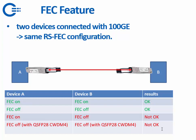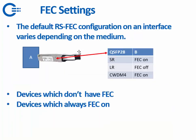FEC settings are typically configured by the switch or router itself. The device will look at the optic module type — whether it's an SR, LR, CWDM4, or copper — and turn FEC on or off based on that. For example, for an SR it turns FEC off, for an LR it also turns it off, and for a CWDM4 it turns it on.